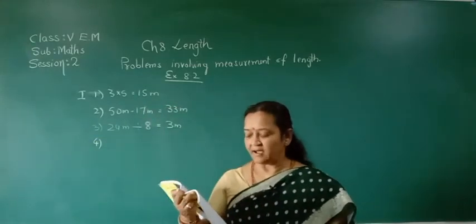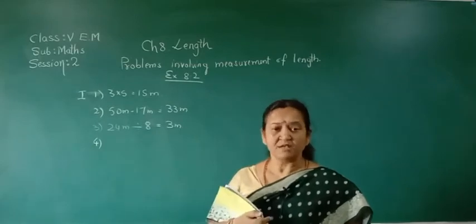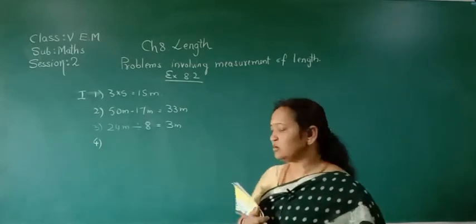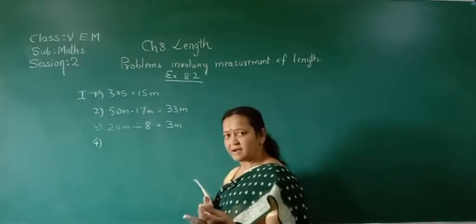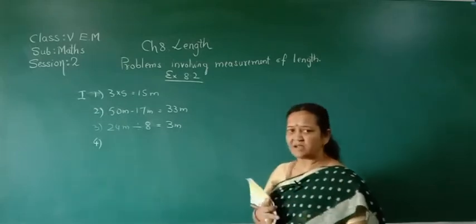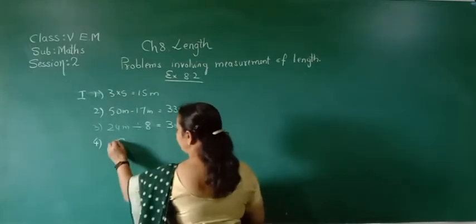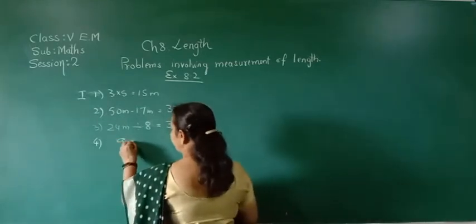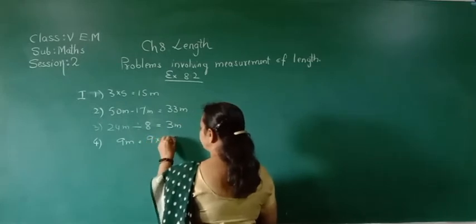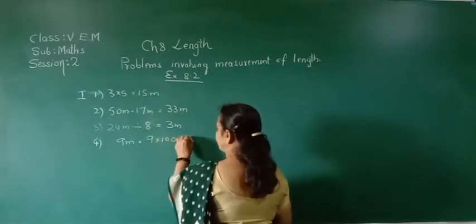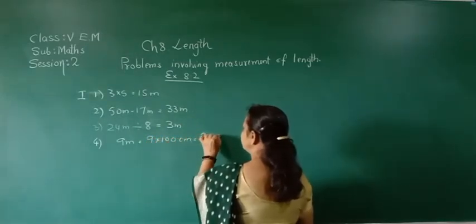How many centimeters are there in 1 meter? We already know: 1 meter equals 100 centimeters. Then 9 meters equals 9 into 100, which is 900 centimeters.